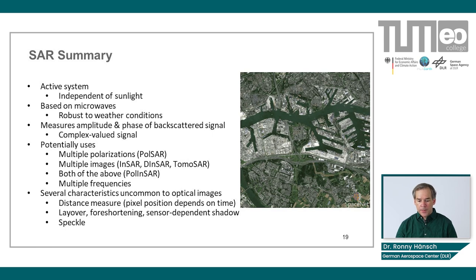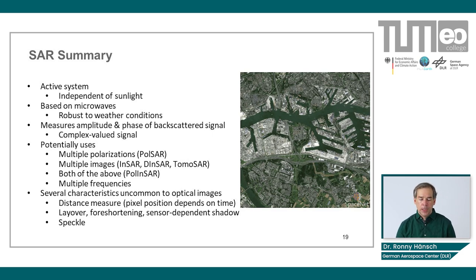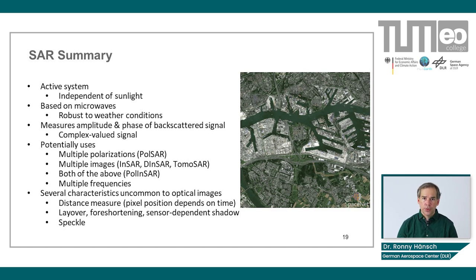SAR images are more complicated than optical images due to several properties we're not used to: it's a complex-valued signal; it's a distance measure rather than an angle measure, causing layover and foreshortening; shadows are sensor-dependent rather than illumination-dependent; and there is the speckle effect, which will be discussed more in the second part of this lecture.